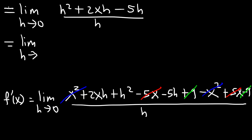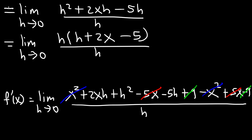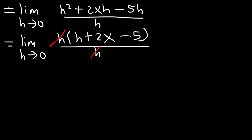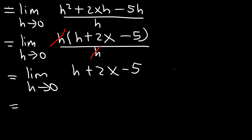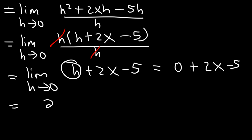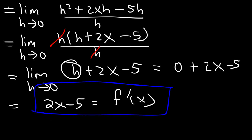Now let's factor out the greatest common factor in the numerator, which is h. h squared divided by h is h. 2xh divided by h is 2x. Negative 5h divided by h is negative 5. So now we can cancel those two h's. And so we have the limit as h approaches 0 of h plus 2x minus 5. Now let's use direct substitution — replace h with 0. So 0 plus 2x minus 5 is simply 2x minus 5. So that's the first derivative of x squared minus 5x plus 9. It's 2x minus 5.